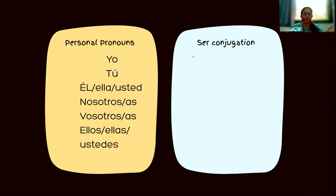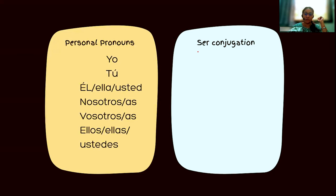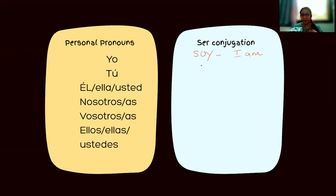Now let's start with the ser conjugation as per the personal pronouns. Just like in English, the verb changes depending on the pronoun. For 'yo,' we say 'soy' — yo soy means 'I am.' For 'tú,' we say 'eres' — tú eres means 'you are.'